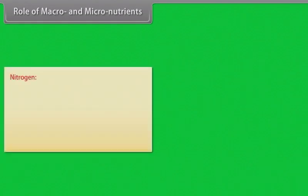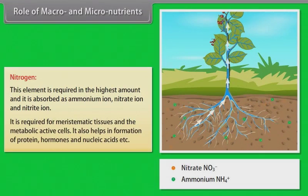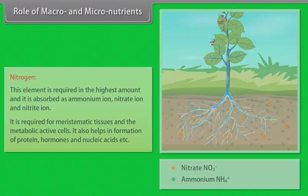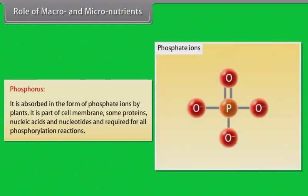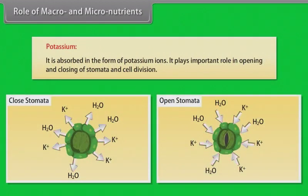Role of macro and micronutrients. Nitrogen: this element is required in the highest amount and it is absorbed as ammonium ion, nitrate ion and nitrite ion. It is required for meristematic tissues and metabolically active cells. It also helps in formation of protein, hormones and nucleic acids. Phosphorus: it is absorbed in the form of phosphate ions. It is part of cell membrane, some proteins, nucleic acids and nucleotides, and required for all phosphorylation reactions. Potassium: it is absorbed in the form of potassium ions and plays an important role in opening and closing of stomata and cell division.